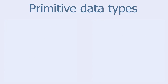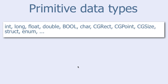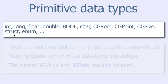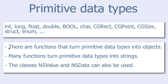Here are some examples of primitive data types: integers, floats, characters, rectangles, points, sizes, structures, and so on. Inside iOS, there are functions that turn many of these primitive data types into objects. For instance, there are functions that will transform a rectangle or a point to a string. There are also special classes like NSValue and NSData that can be used for more general object wrapping.